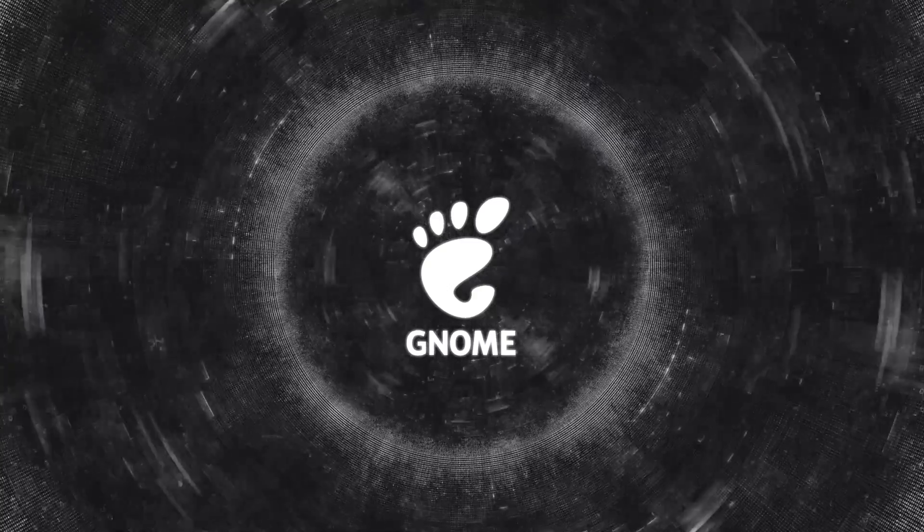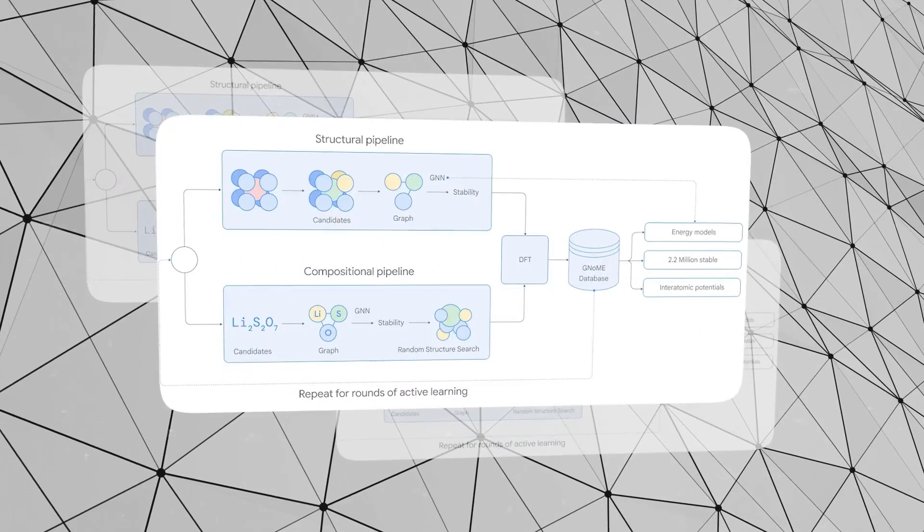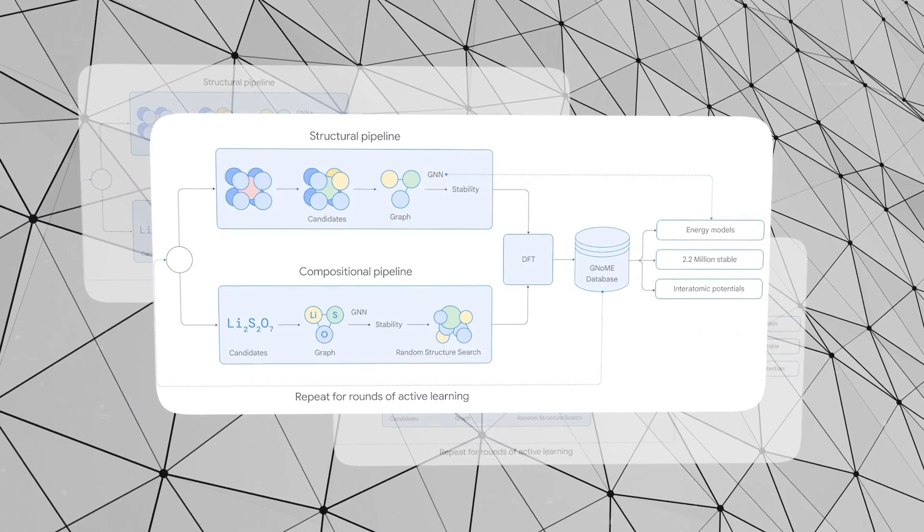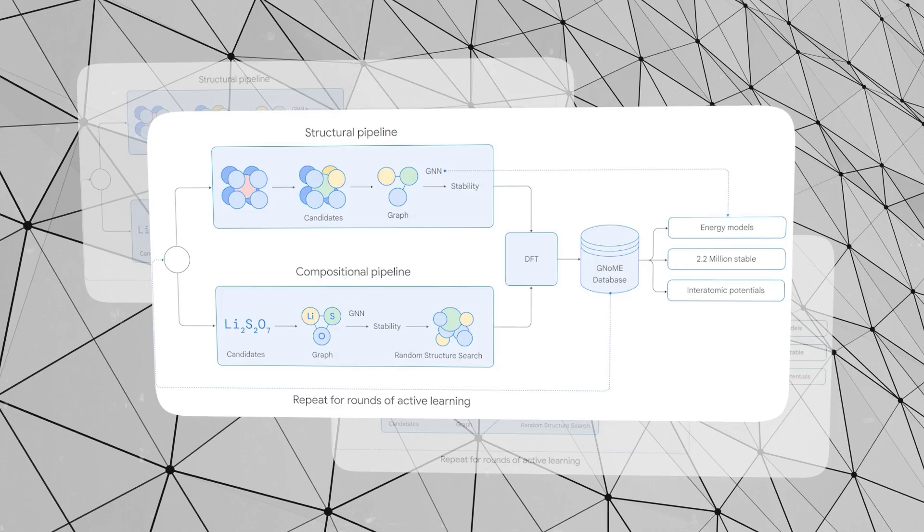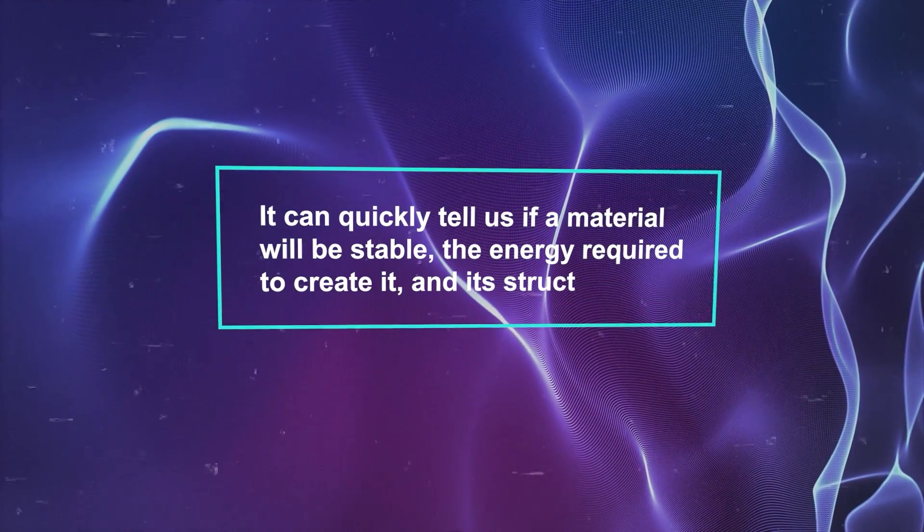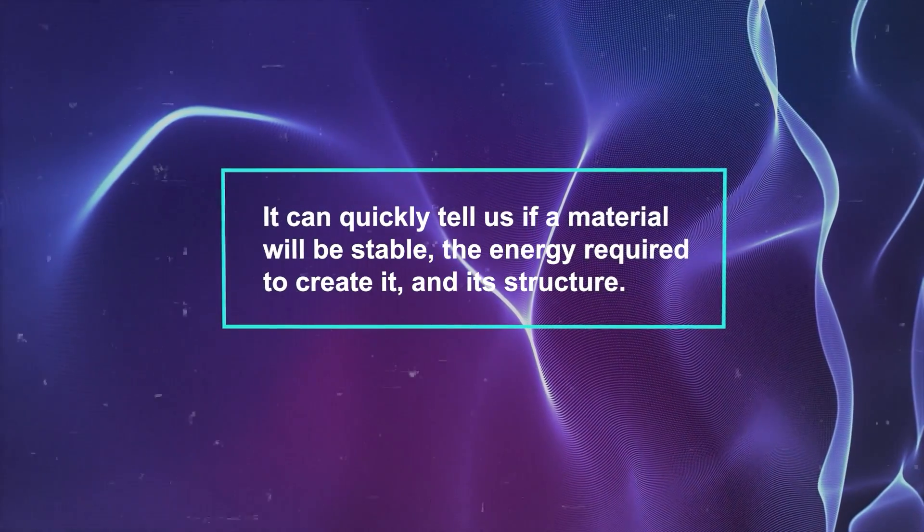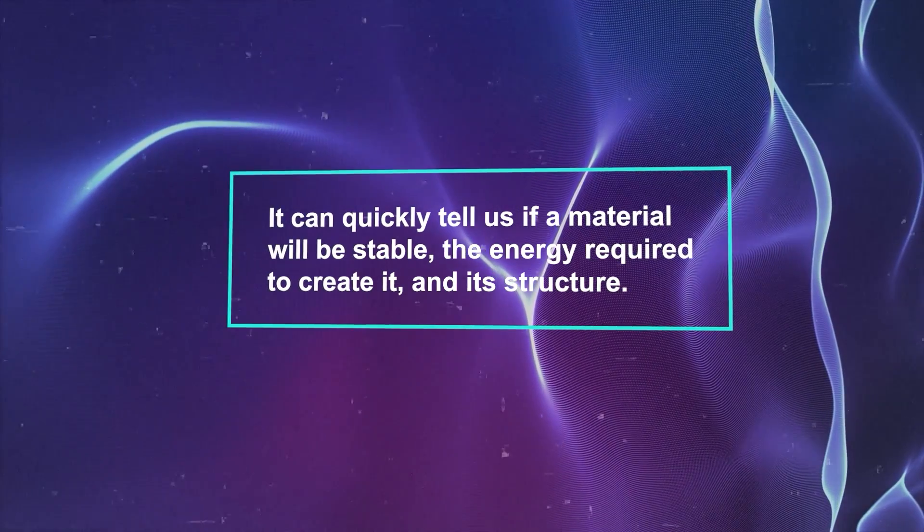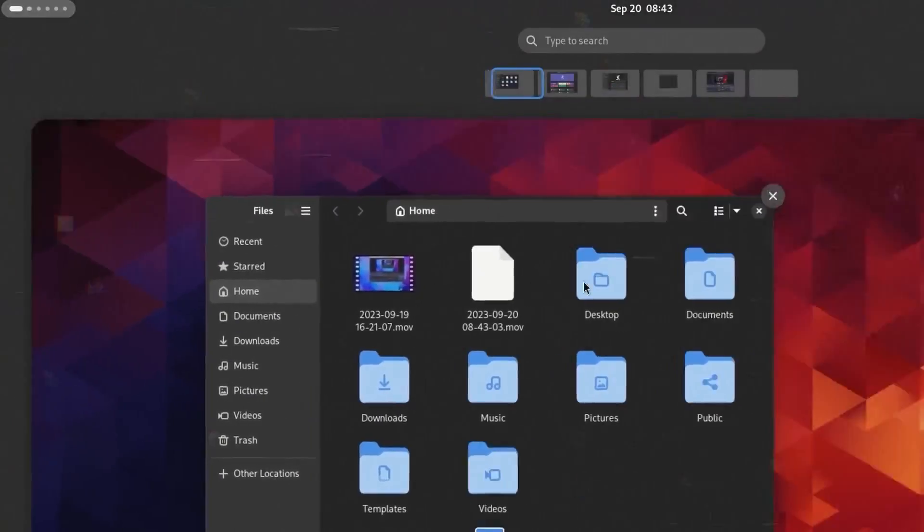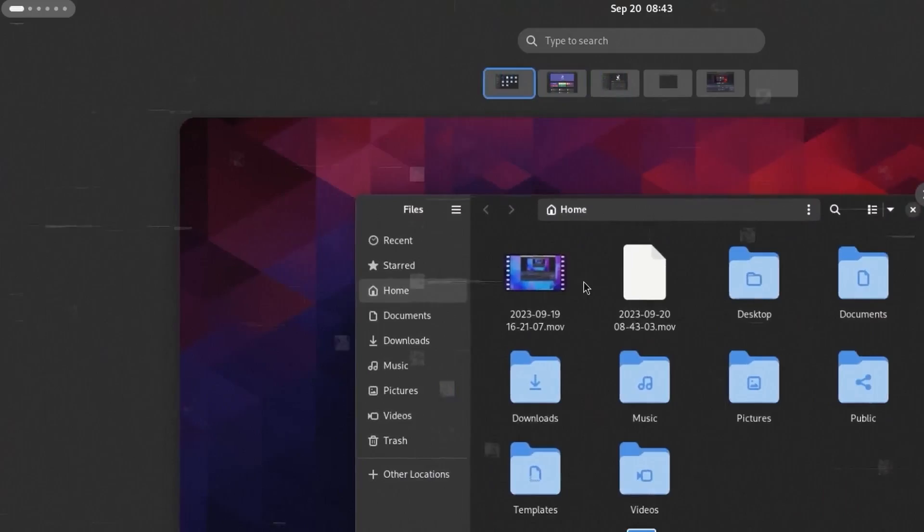This is where GNoME is a game changer. It looks at all the information we already have on materials and uses that to predict new ones. It can quickly tell us if a material will be stable, the energy required to create it, and its structure. What's amazing is that GNoME can do this analysis for millions of materials in just a few hours—a task that would normally take years.